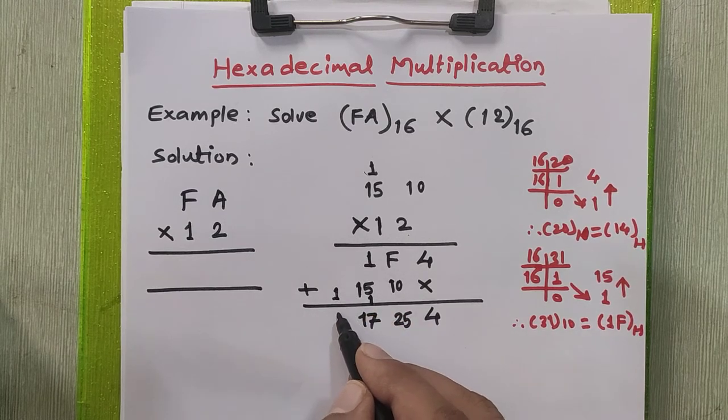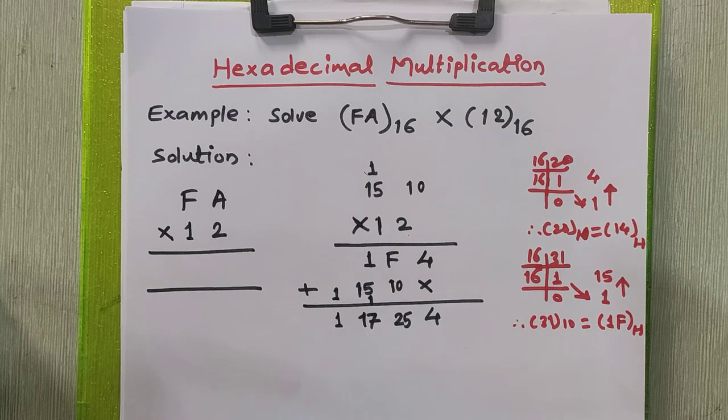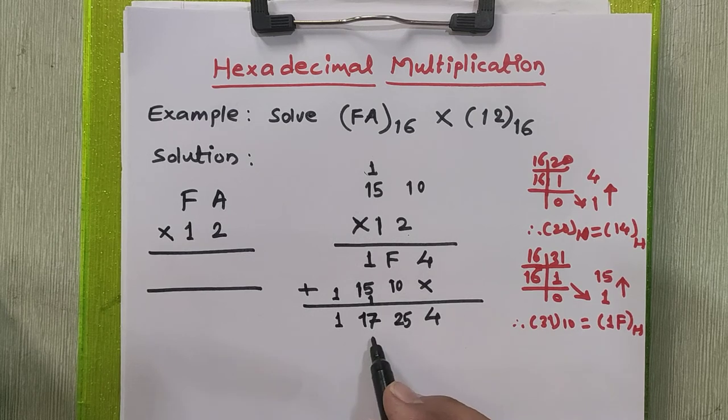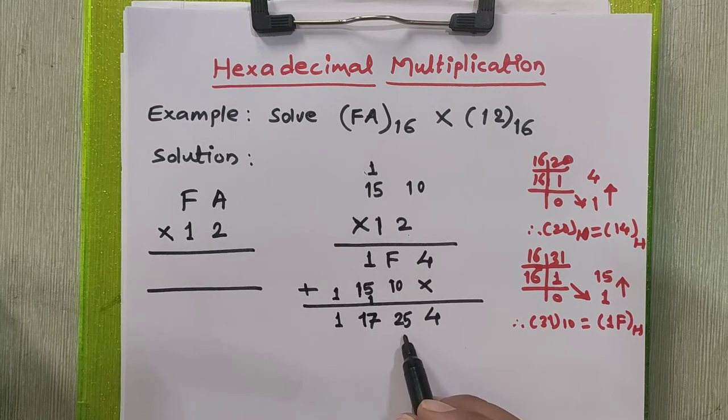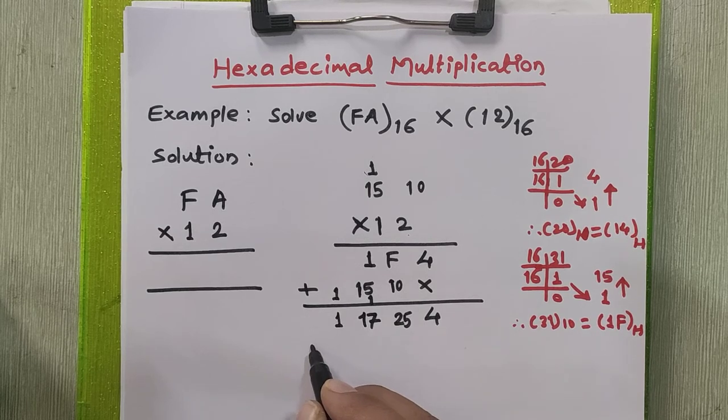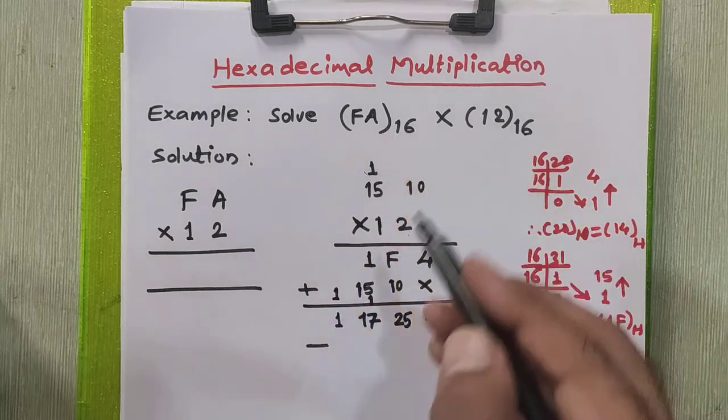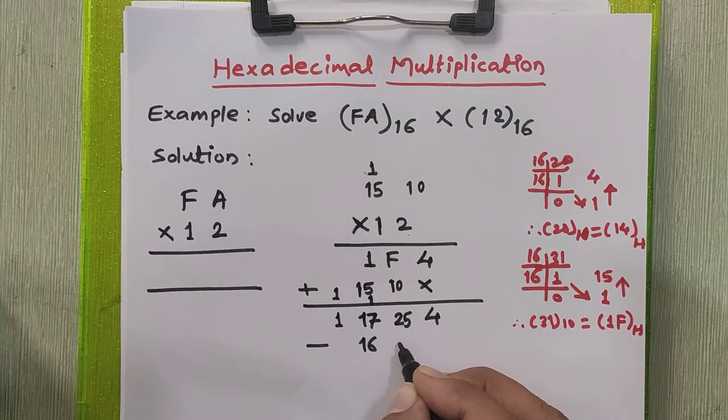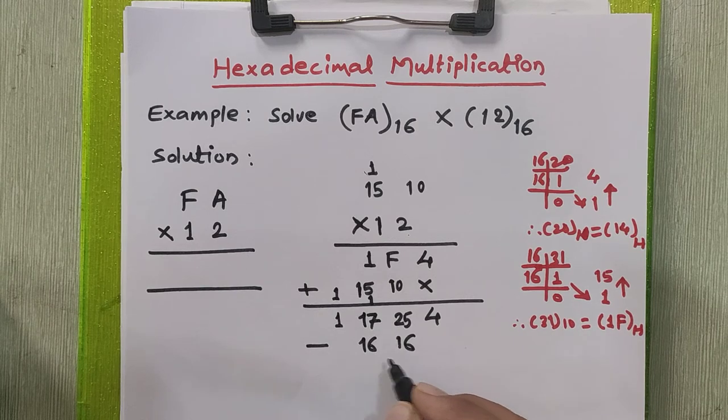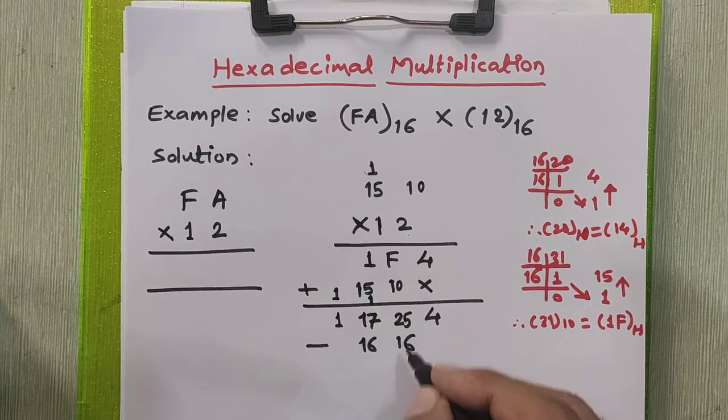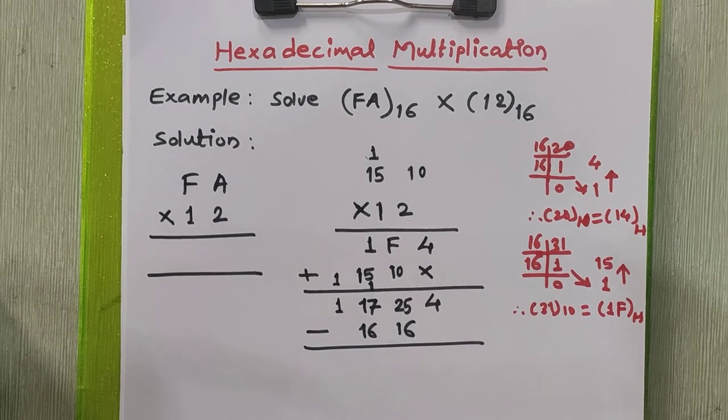We will copy this 1 as it is because there are no further digits for addition. At last in the result, if you have any invalid hexadecimal digits, we need to check. Are there any invalid hexadecimal digits into this final result? Yes, there are. These are invalid hexadecimal digits. So we need to subtract the base of the system, that is 16, from each invalid hexadecimal digit to get our actual result of this multiplication.